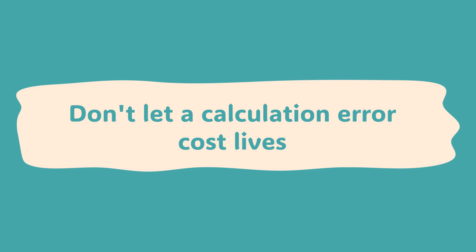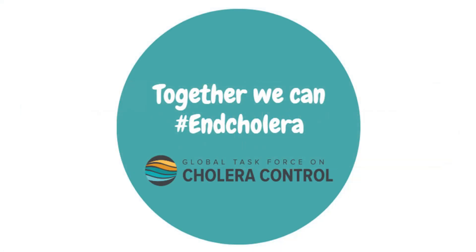We've just seen how calculating cholera mortality indicators correctly leads directly to life-saving action. It raises the question: if using the right data saves lives, what are the real-world costs in public health of getting it wrong? Don't let a calculation error cost lives. Together, we can end cholera. Let's go.